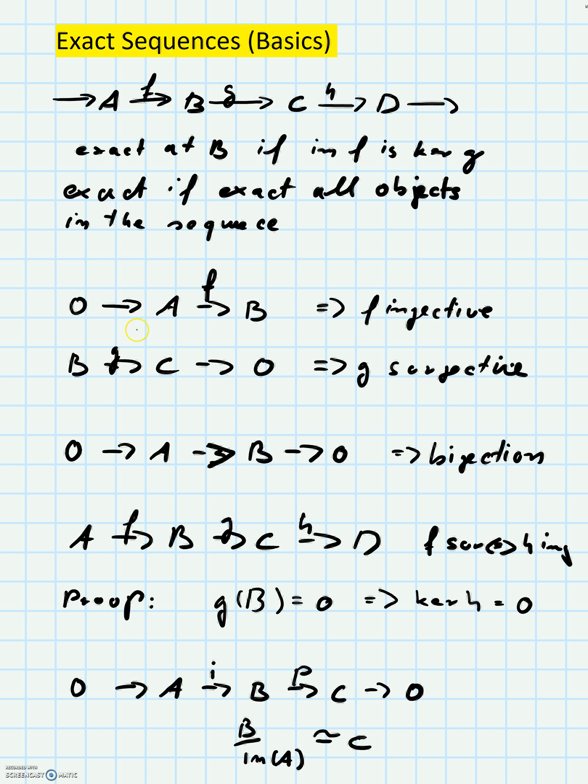Now some easy properties. Suppose you have a sequence 0→A→B, and if this is exact you can conclude that F has to be injective, because the image of the map from 0 to A has to be the kernel of this morphism F, and so the kernel of F is 0, so F is injective.